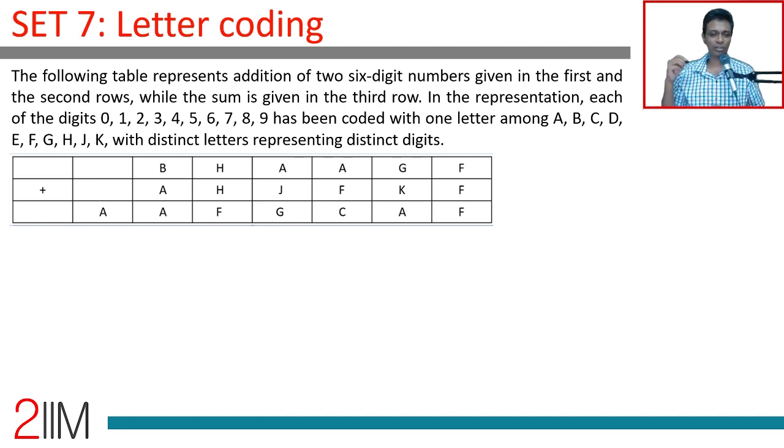Anytime you have two six-digit numbers adding up to a seven-digit number it makes our life super easy because the first digit of the seven-digit number has to be one. Think about it. Even if you're adding 999,999 with 999,999, it's got to be one something. 10,000 plus 10,000 is 20,000. Very simple rule. A is one.